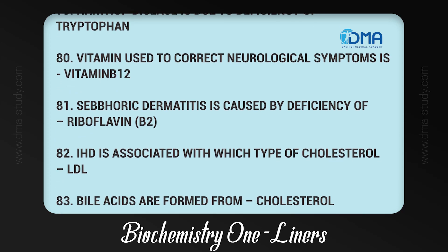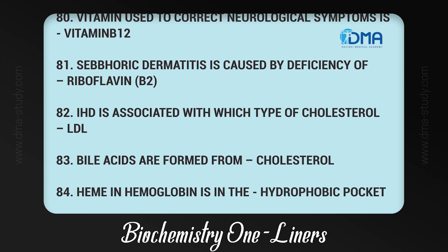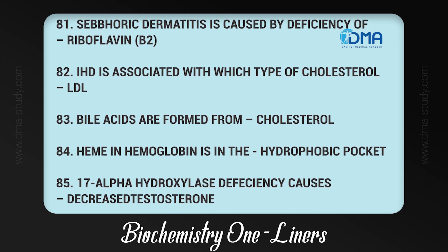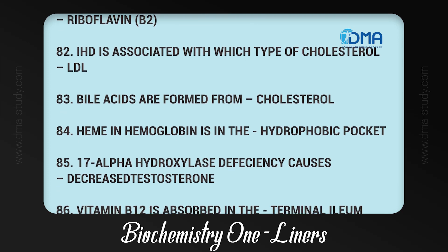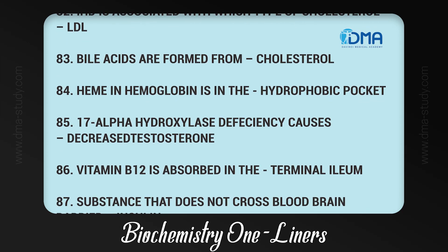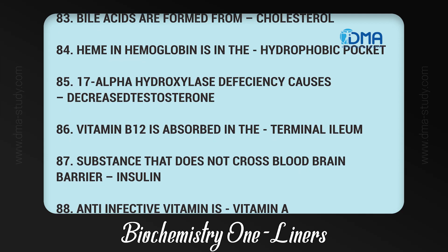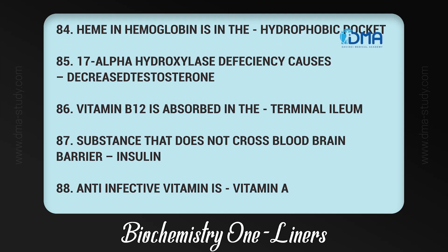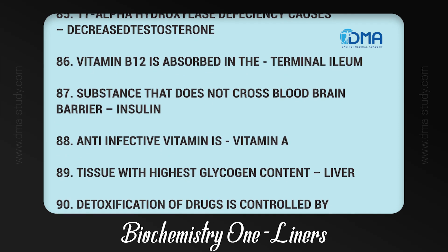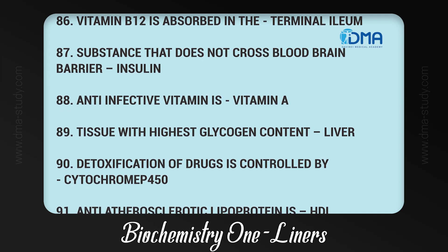81. Seborrheic dermatitis is caused by deficiency of riboflavin (B2). 82. IHD is associated with LDL cholesterol. 83. Bile acids are formed from cholesterol. 84. Heme in hemoglobin is located in the hydrophobic pocket. 85. 17-alpha hydroxylase deficiency causes decreased testosterone. 86. Vitamin B12 is absorbed in the terminal ileum. 87. Substance that does not cross the blood-brain barrier is insulin. 88. Anti-infective vitamin is vitamin A. 89. Tissue with highest glycogen content is the liver.